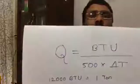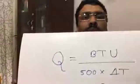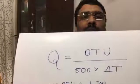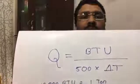This is what we are going to study about. For measuring the quantity of chilled water, there is a simple and easy equation: Q is equal to BTU divided by 500 into delta T. This is a very simple equation.